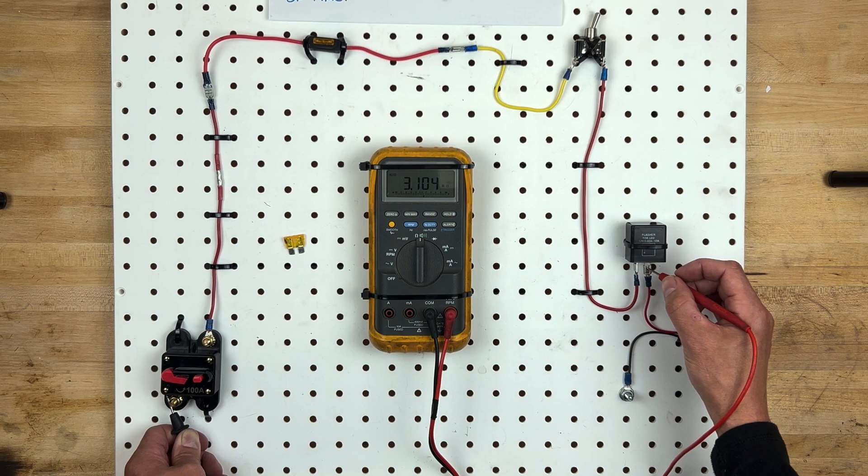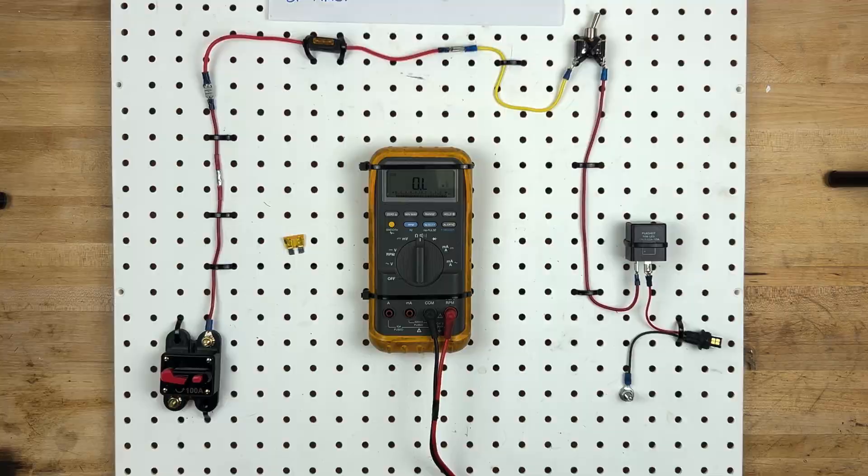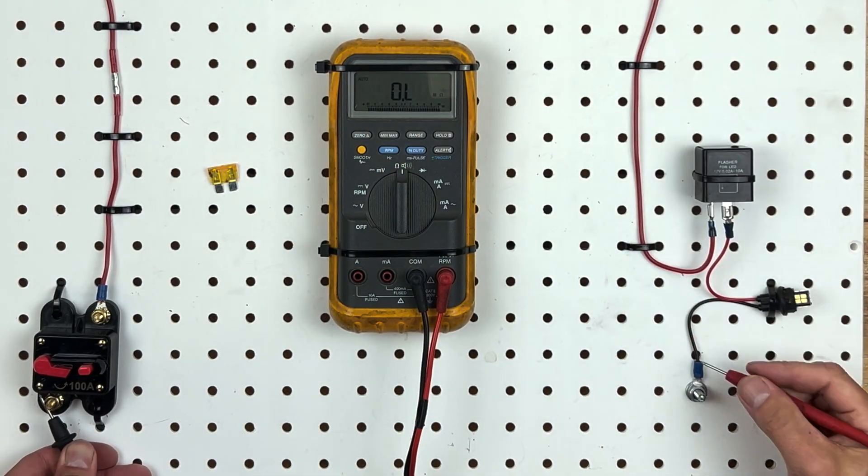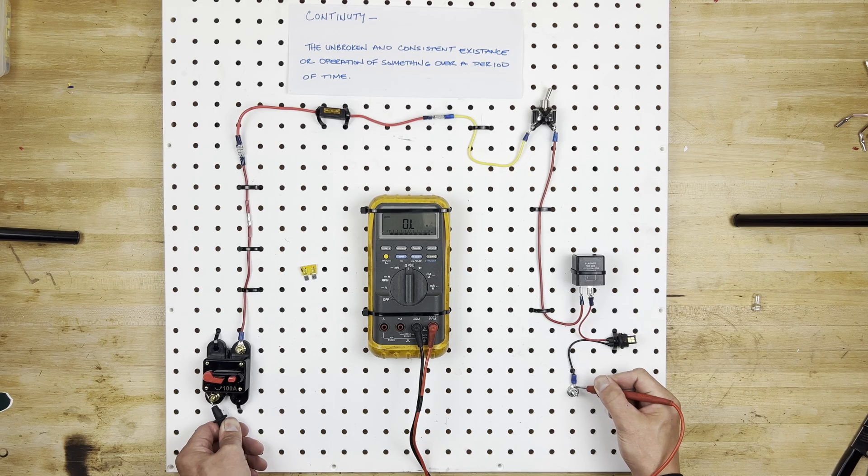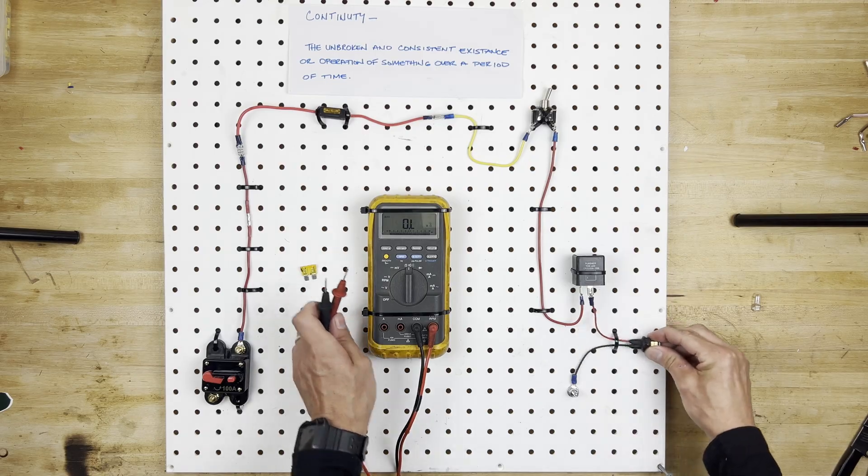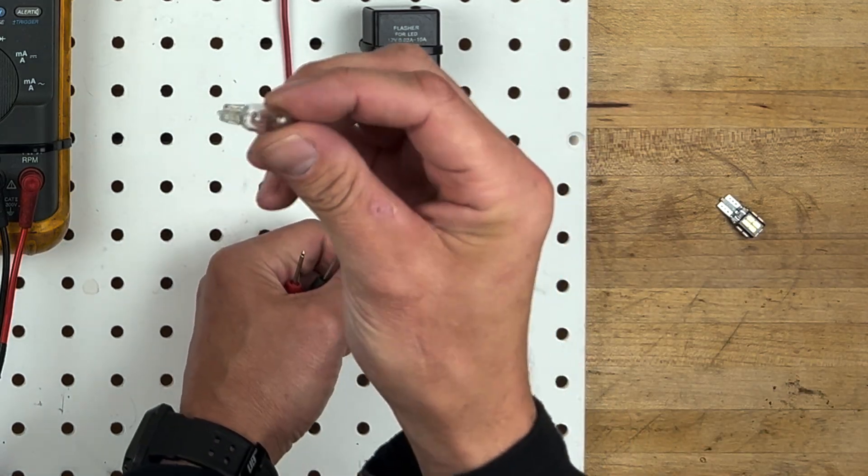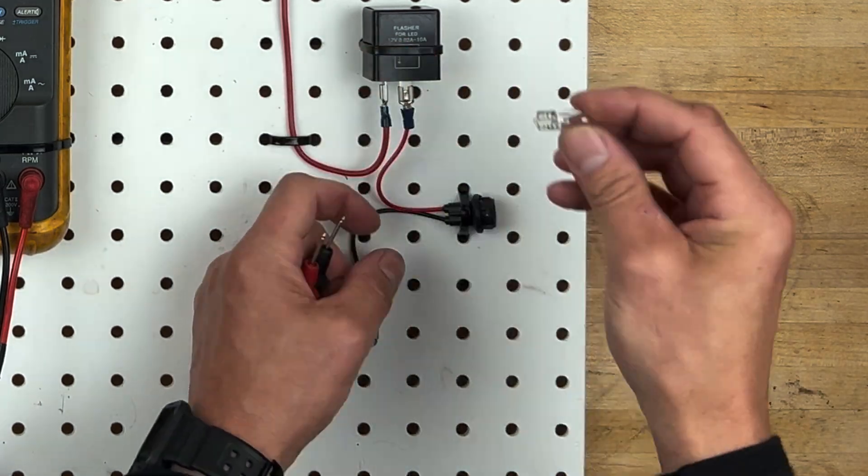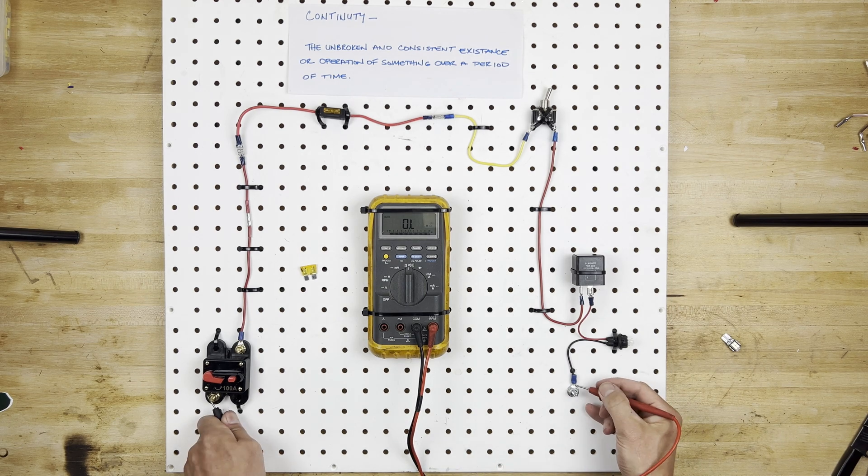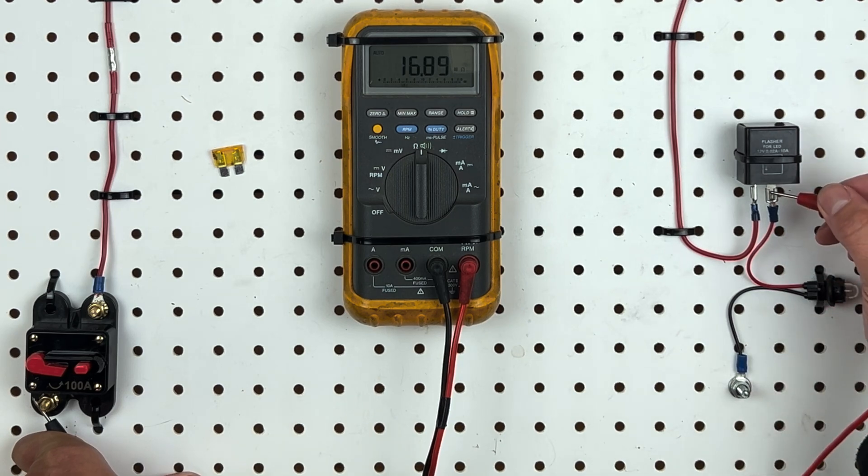Now in a perfect world we would see continuity all the way through this circuit right to the ground terminal, but we don't and that's because LED lights actually have little tiny circuit boards in them that break that continuity. So if we had a regular incandescent bulb like this 194 and then we check for continuity again, we will see that 3.1 mega ohms that we see right here.